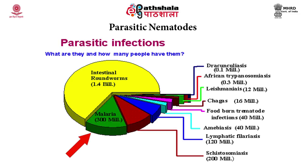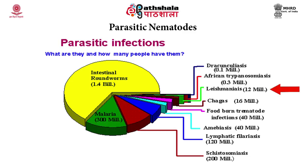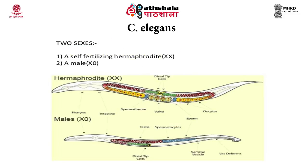Around 300 million of the population is affected by malaria. The other parasitic infections which are also causing great extent of harm include dracunculosis, African trypanosomiasis, Leishmaniasis, Chagas disease, foodborne trematode infections, amoebiasis, lymphatic filariasis and schistosomiasis.